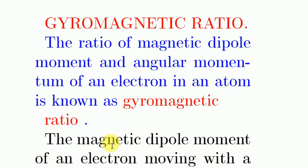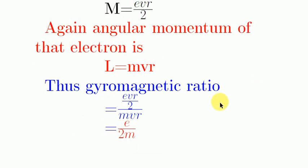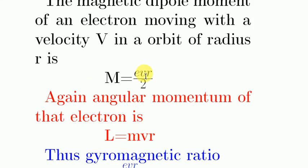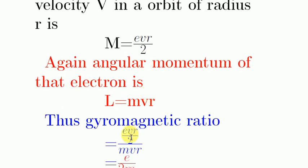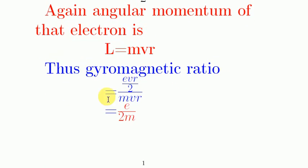Now, according to the definition of gyromagnetic ratio, we can write gyromagnetic ratio equal to capital M by L, where capital M is magnetic dipole moment and capital L is angular momentum of an electron. Thus, gyromagnetic ratio equals evr/2 divided by mvr. Here evr/2 is the magnetic dipole moment and mvr is the angular momentum.